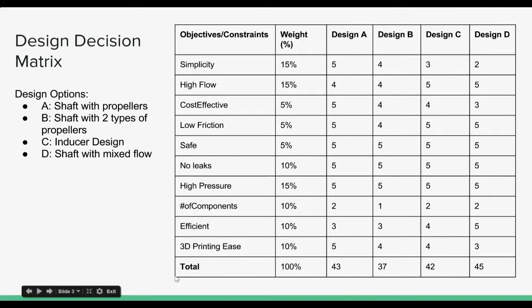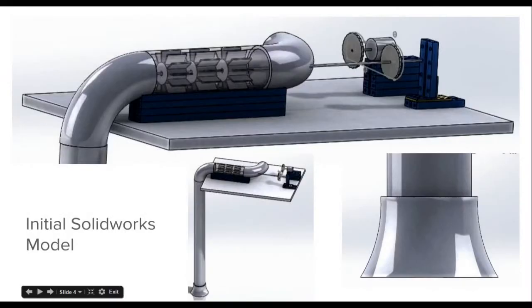From these four designs, we figured out which objectives and constraints we wanted most, and how they weighed in our decision. Our objectives and constraints that we chose were simplicity, high flow, cost effective, low friction, safe, no leaks, high pressure, number of required components like linkages or if it used a pulley system or gears, efficient, and 3D printing ease.